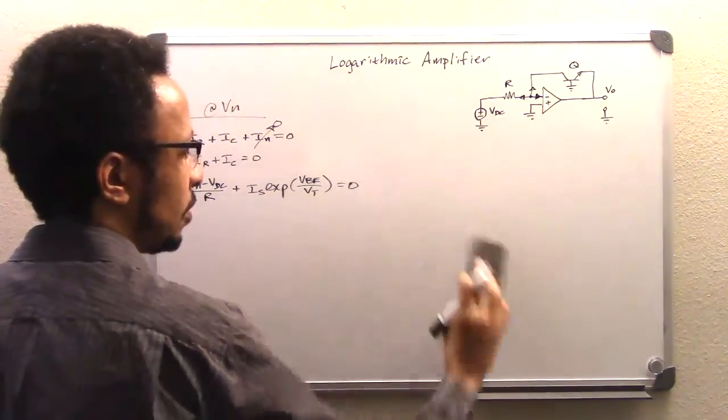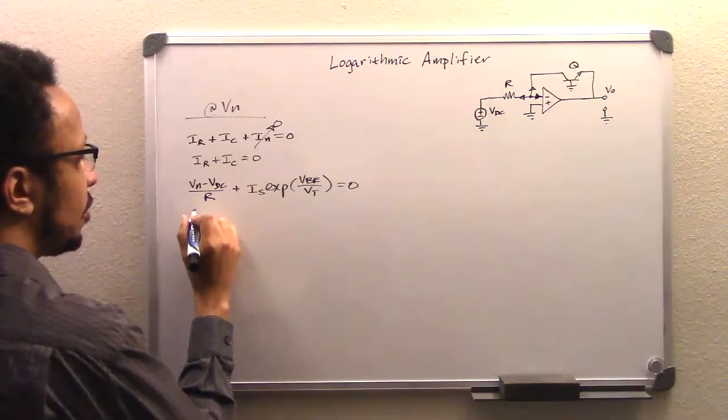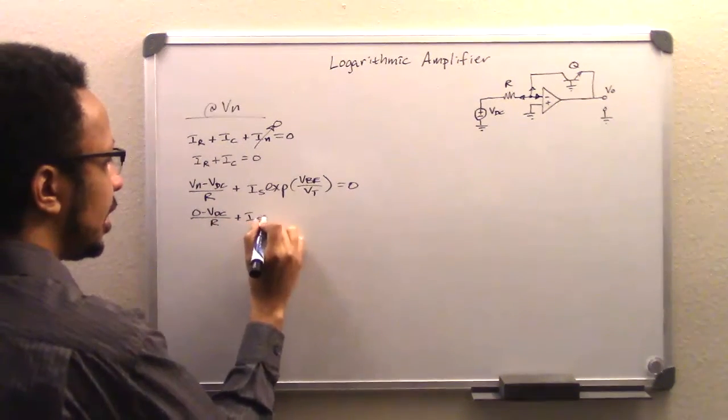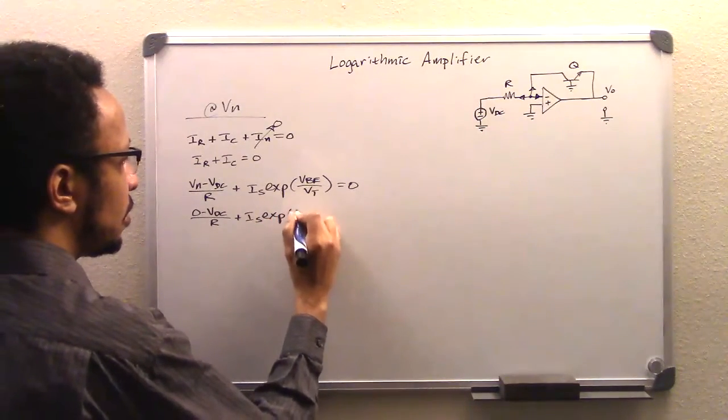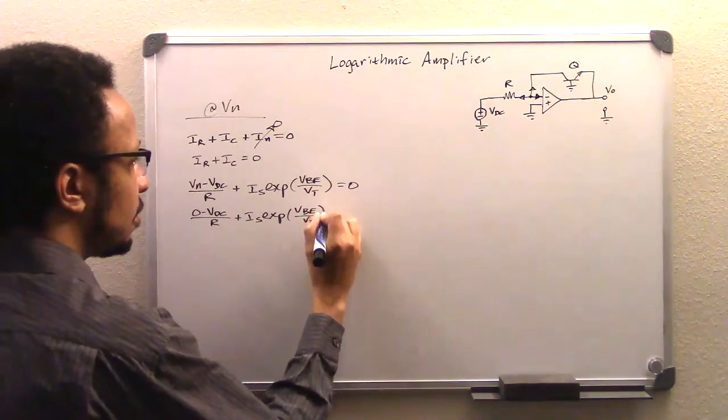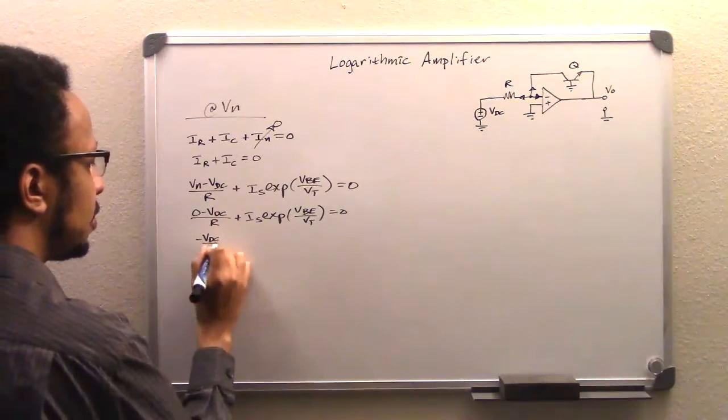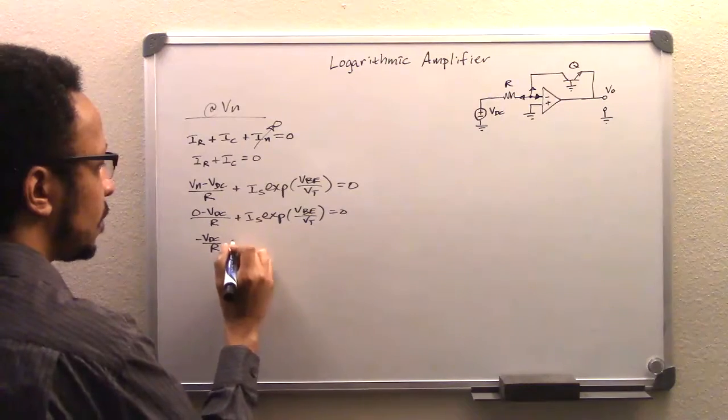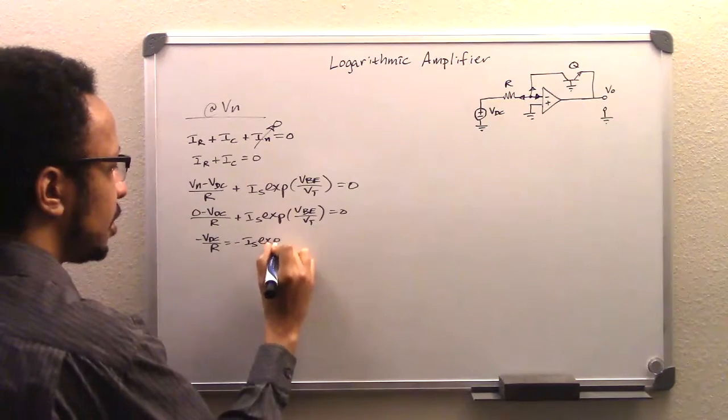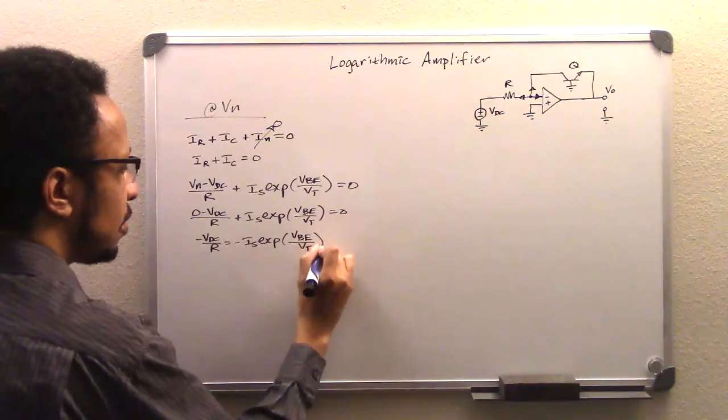And so putting that into our equation, we have zero minus VDC over R plus IS exp VBE over VT equals zero. And of course,